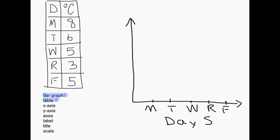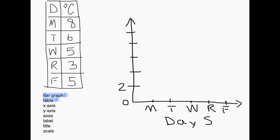Along the side we have to decide how we want to divide up our numbers. Looking at the data, the lowest number is 3 and the highest number is 8. So it's easy to go with 0 to 10 — we won't need to go below 0 and we will not need to go above 10. Right at the corner I can set it as 0 and then make some notches up: 2, 4, 6, 8, 10.